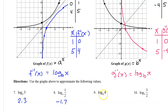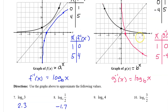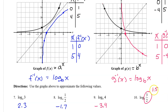For number 9, to approximate log base b at 4, jump over to the red graph. At an input value of 4, the output value looks to be about negative 3.4. Similarly, to approximate log base b at 3/2 — which equals 1.5 — go to an input value of 1.5 and see where the output value is. It seems very close to negative 1, so that's the approximation.